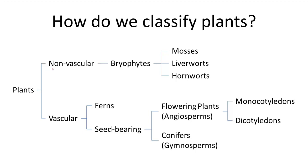You can see in this flow chart the division between non-vascular and vascular plants. Vascular tissue is the tissue within plants that transports water and nutrients up the roots and stems. This chart is a little simplified because it only includes the plants we'll be examining more closely. Bryophytes are the only non-vascular plants we'll be learning about, whereas ferns, flowering plants, and conifers are vascular plants. That means bryophytes do not have vascular tissue, while ferns, flowering plants, and conifers do.